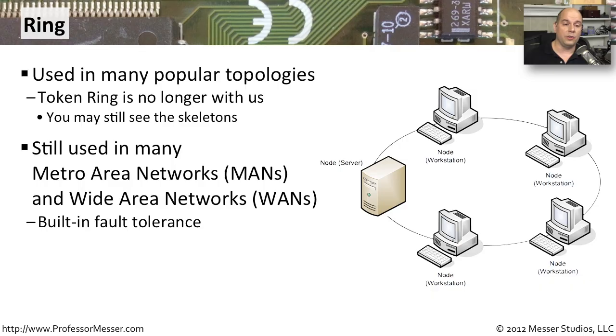If someone is working on the road and accidentally breaks one of those connections, you've still got connectivity that you can use to circle around the other direction, because everyone is connected in a single ring.